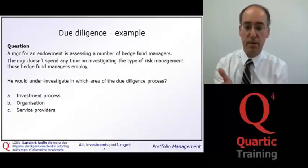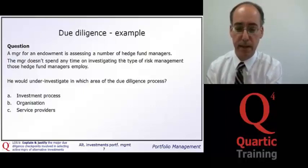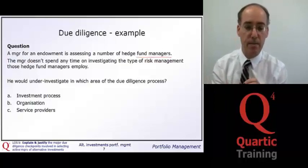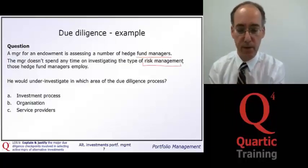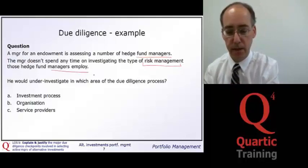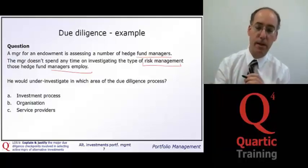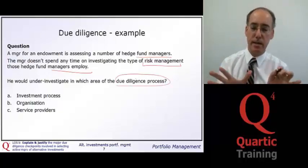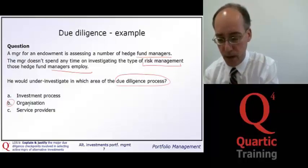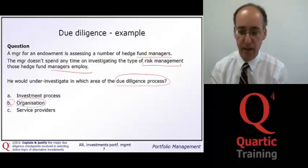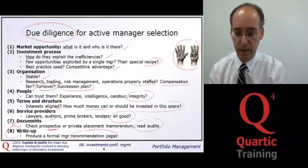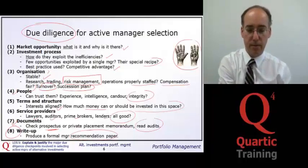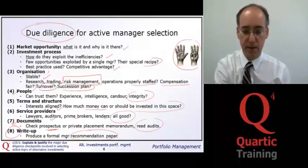Here is a brief example of due diligence. A manager for an endowment is assessing a number of hedge fund managers and wants to select one. The manager does not spend any time investigating the type of risk management those hedge fund managers employ. The question is: which area of the due diligence process would they under-investigate? The answer is B — organization — because risk management is part of the organization step of the due diligence process.